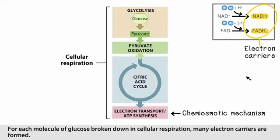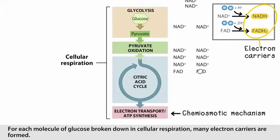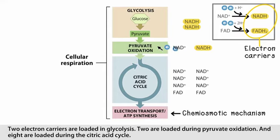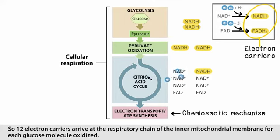For each molecule of glucose broken down in cellular respiration, many electron carriers are formed. Two electron carriers are loaded in glycolysis, two are loaded during pyruvate oxidation, and eight are loaded during the citric acid cycle. So 12 electron carriers arrive at the respiratory chain of the inner mitochondrial membrane for each glucose molecule oxidized.